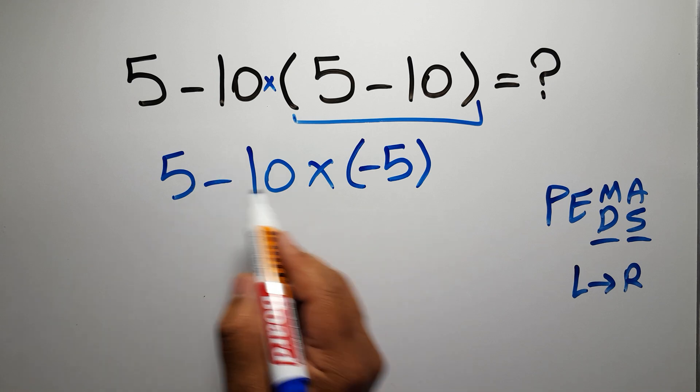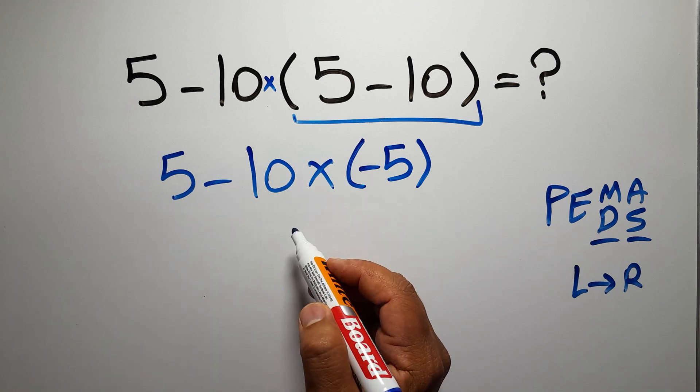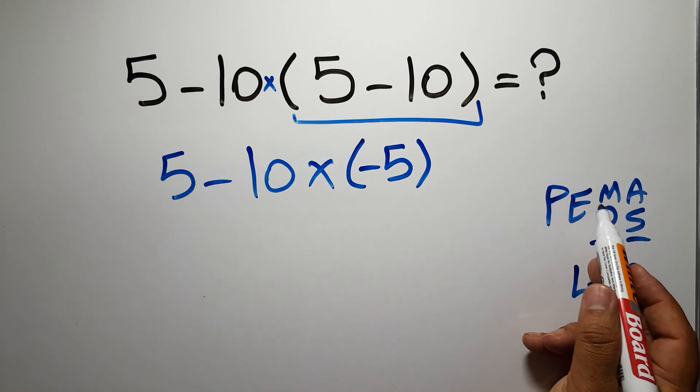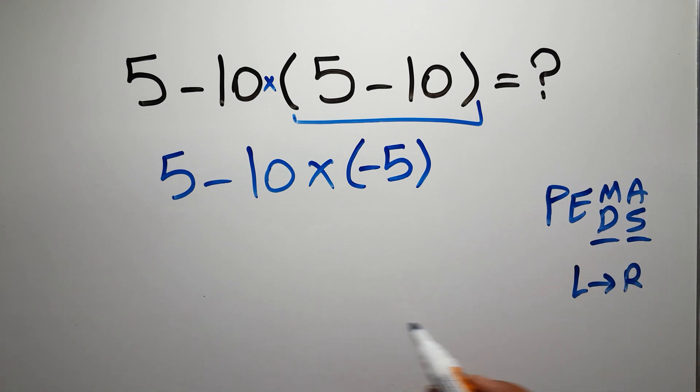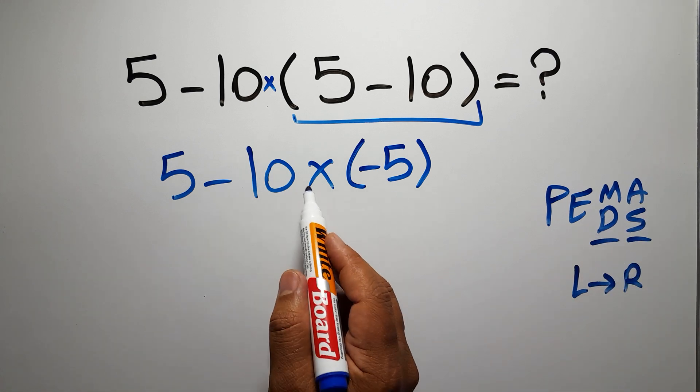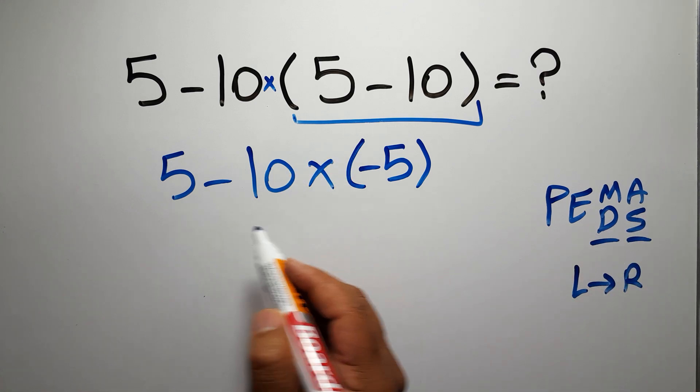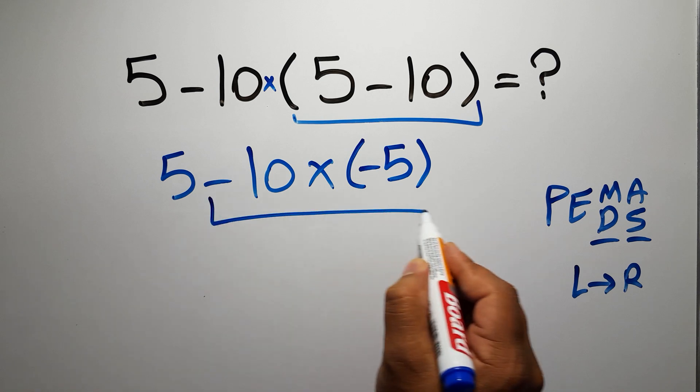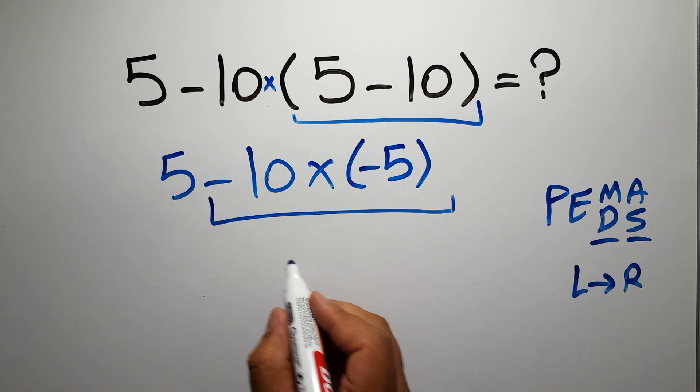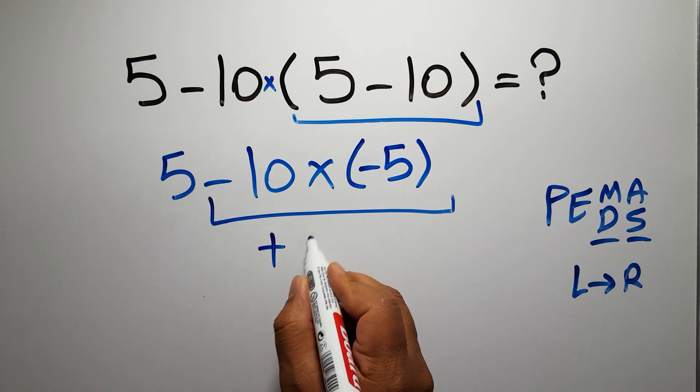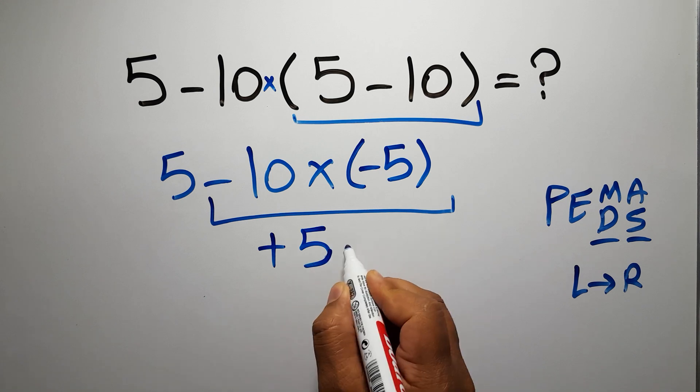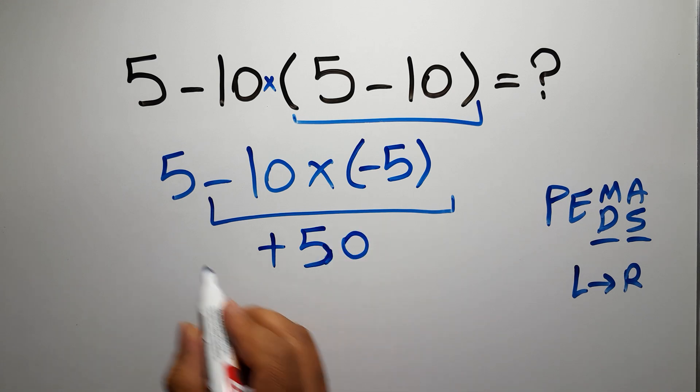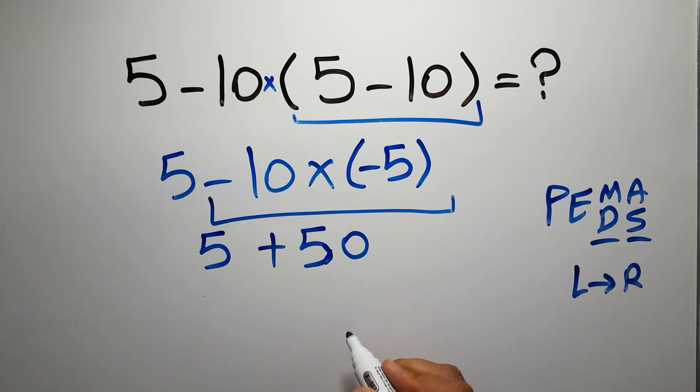Now we have one subtraction and one multiplication. In PEMDAS, multiplication comes before subtraction, so here first we have to do this multiplication. Negative 10 times negative 5 gives us positive 50.